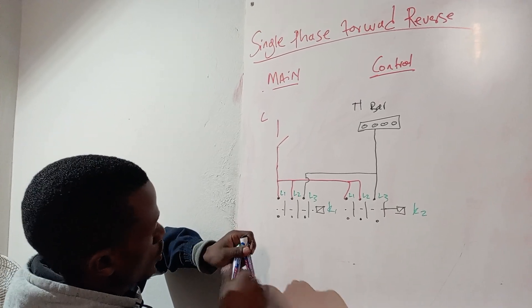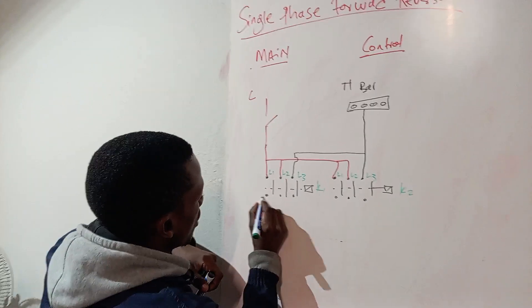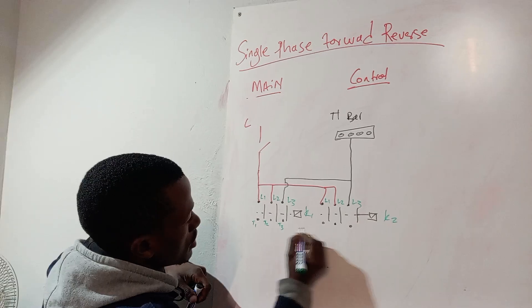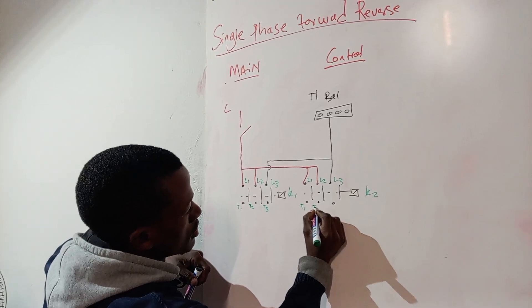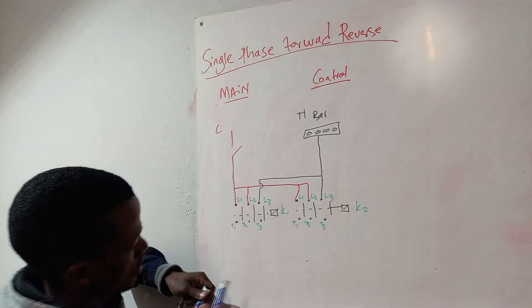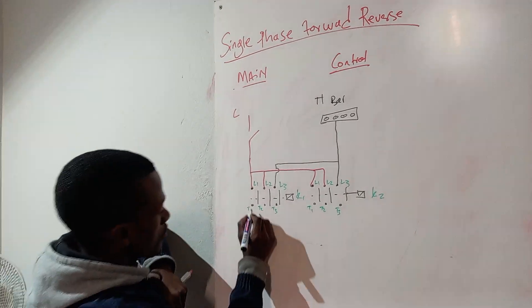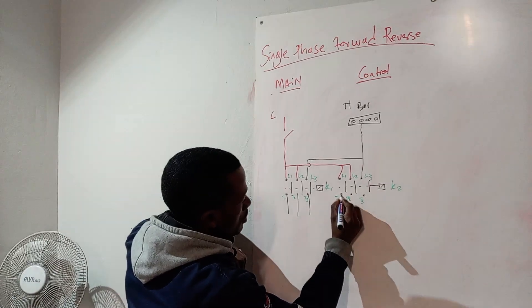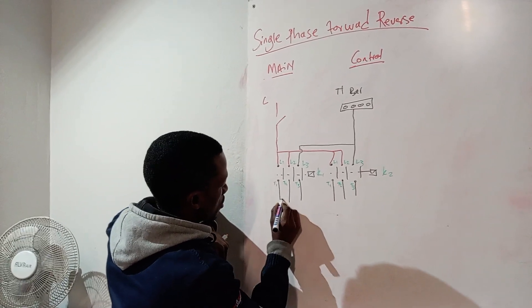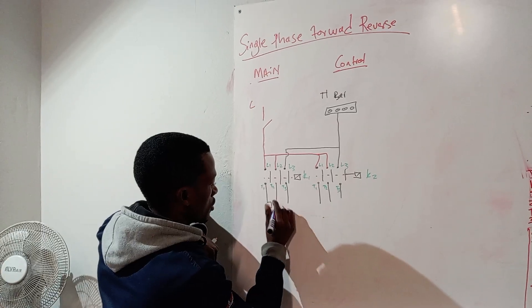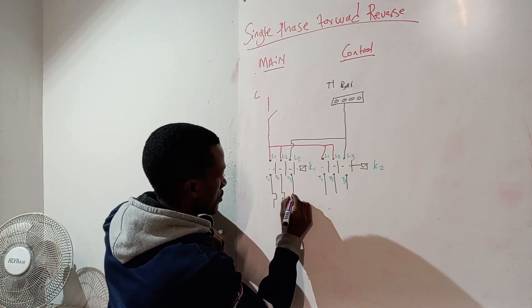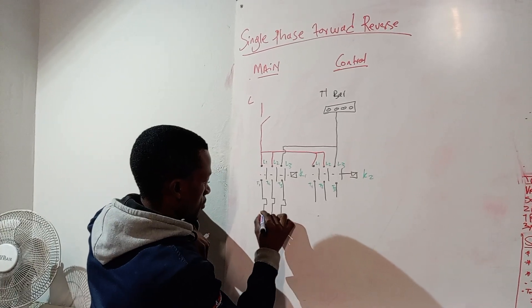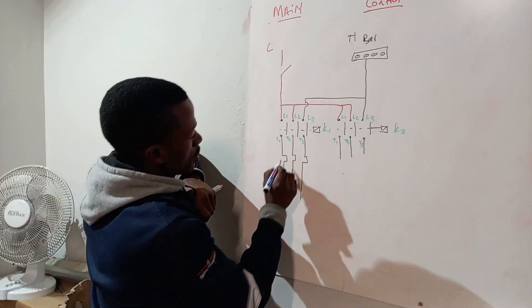Okay, we're going to have T1, T2, T3. T1, T2, T3. So this is now the output of your contactors, but now put the overload relay safe. Yeah, this is your overload.